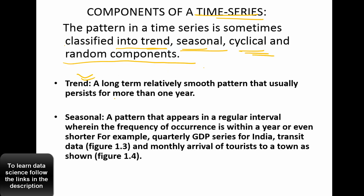What is a trend? The technical meaning is similar to the everyday English meaning. When we say trend, what comes to mind is either upward or downward movement. By definition, trend is simply a long-term pattern in the data — either upward, downward, or a mix of both. That's what we call trend.